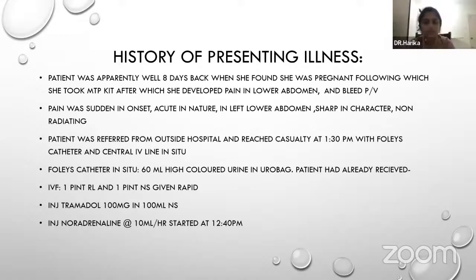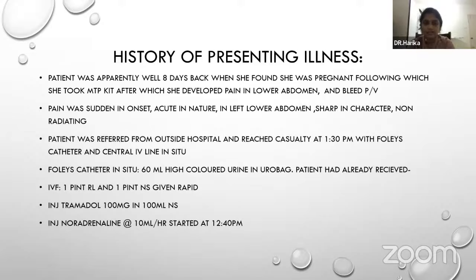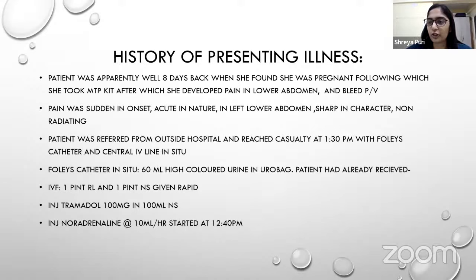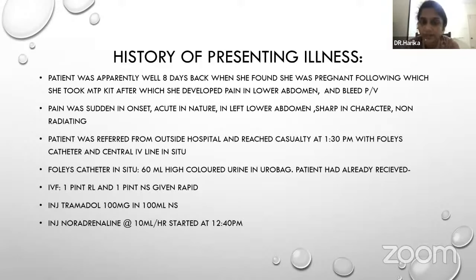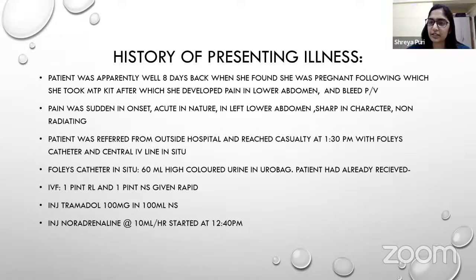The instructor asks who gave the history, noting the patient was conscious and coherent. The student explains the patient came with a paper showing what she had consumed. The instructor clarifies that treatment details — such as IV lines, central line placement, and medications — should go under treatment history, not history of present illness, as patients generally don't know the names of drugs given to them.